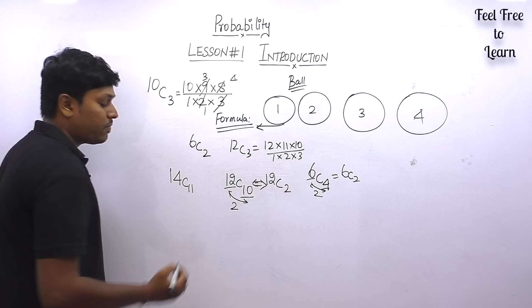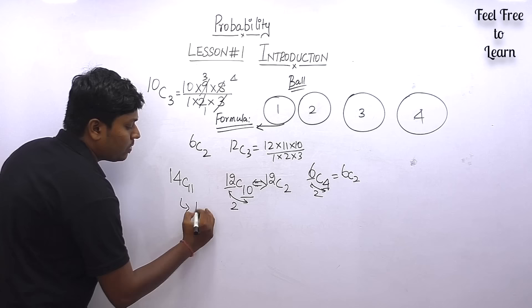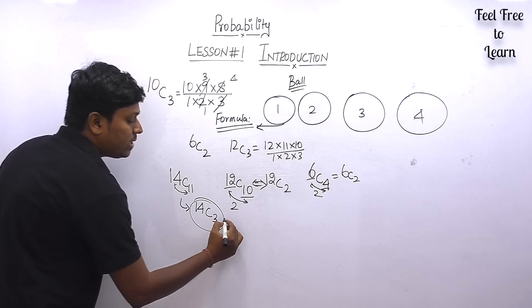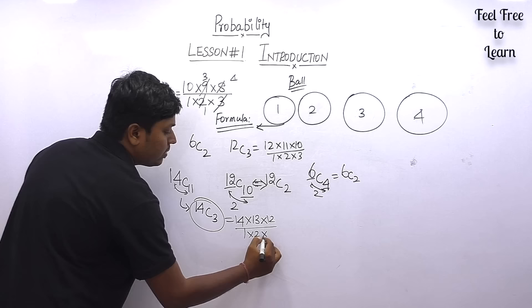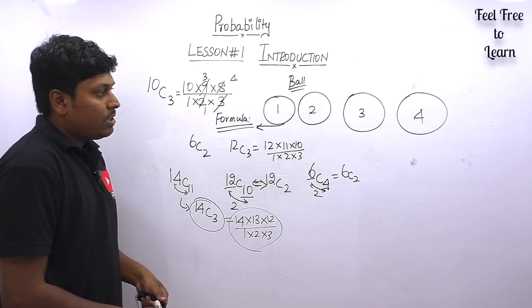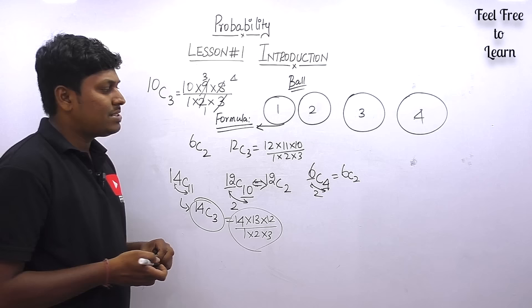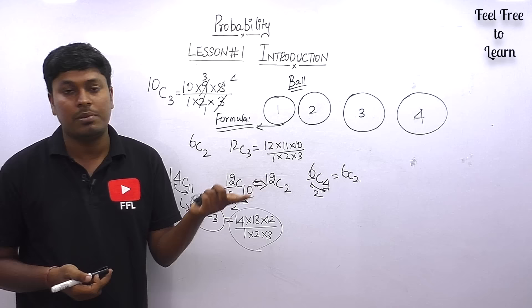For example, 14C11 — instead of reducing 14 eleven times, convert it: 14 minus 11 equals 3, so write it as 14C3. Then calculate 14 into 13 into 12, divided by 1 into 2 into 3, cancel, and find the answer easily. This is the basics needed to solve questions in lessons five, six, and seven. For the first three lessons, only the basic probability formula is needed.